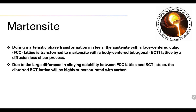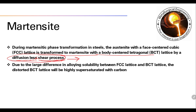During martensitic phase transformation in steels, austenite with a face-centered cubic lattice is transformed to martensite with a BCT lattice by a diffusionless shear process. Due to the large difference in alloying solubility between the FCC and BCT lattices, the distorted BCT lattice is highly supersaturated with carbon — that is why it is called a supersaturated solid solution.